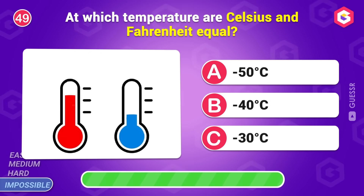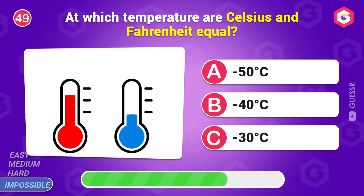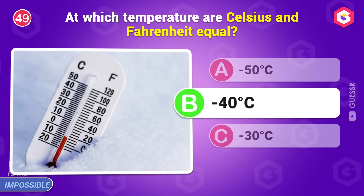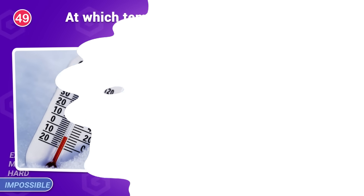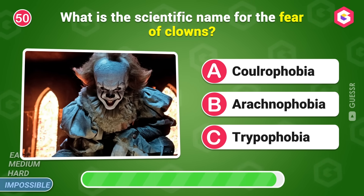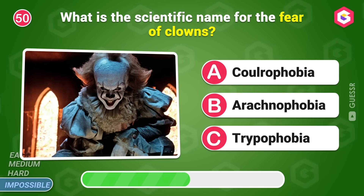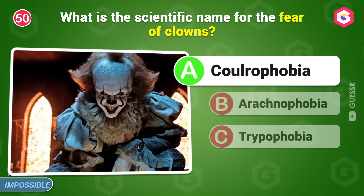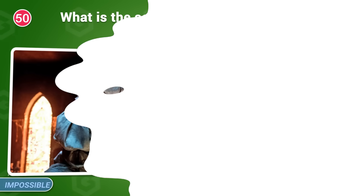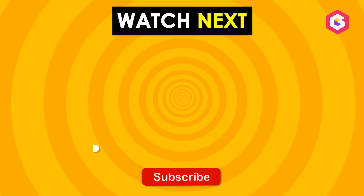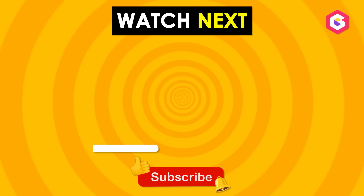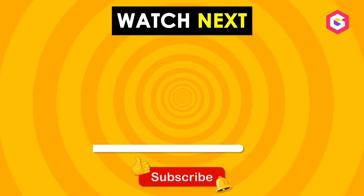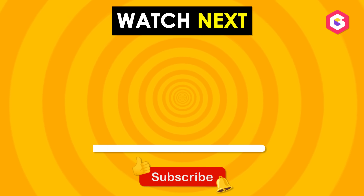At which temperature are Celsius and Fahrenheit equal? Minus 40 degrees. Last question: what is the scientific name for the fear of clowns? Coulrophobia. And that's the end of our science quiz! How many answers did you get? Tell us your final score in the comments below. If you had fun, don't forget to check out our channel for more exciting quizzes. Thanks for playing, and we will see you in the next challenge. Goodbye!